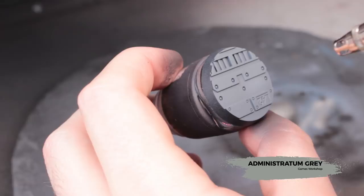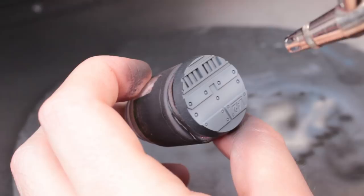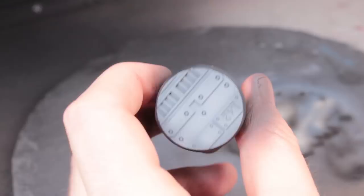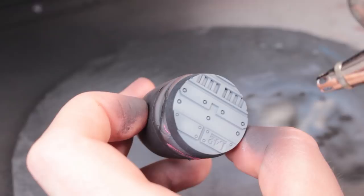Now I'm going to take Administratum Grey and I'm going to highlight the middle of each of the panels on the base. If you don't have an airbrush, you can do this by stippling with your paintbrush with not very much paint on it. It's kind of like dry brushing, but stabbing at the centre of the models rather than dragging the brush back and forth over the model.